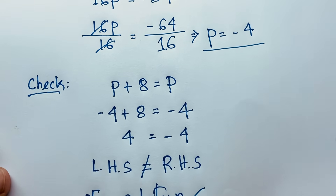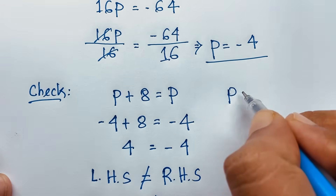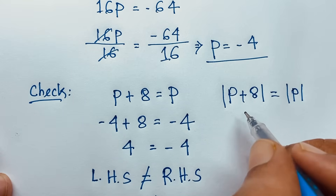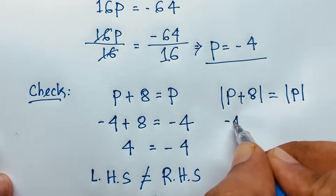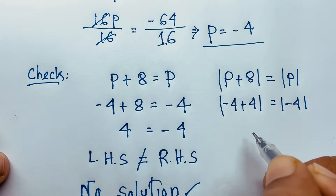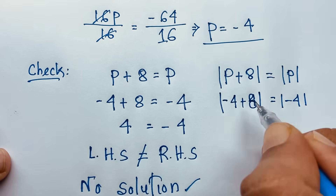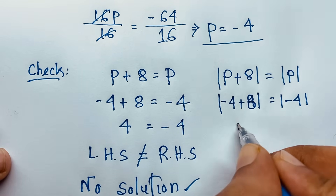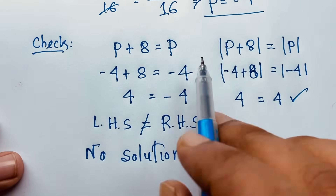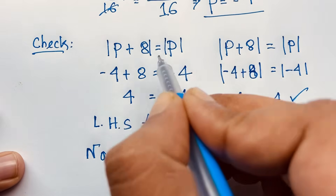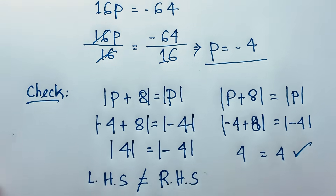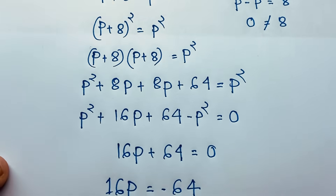But if you think of this as |P + 8| = |P| — that is, both sides as absolute values — then substituting P = -4: |-4 + 8| = |-4|, which gives |4| = |-4|, so 4 = 4. Left-hand side and right-hand side are both equal! So you can see that when we use absolute values, we find our final answer P = -4 in this math problem. Thank you all — if you enjoy this math problem please subscribe to my channel for other interesting videos. Goodbye, take care everyone!